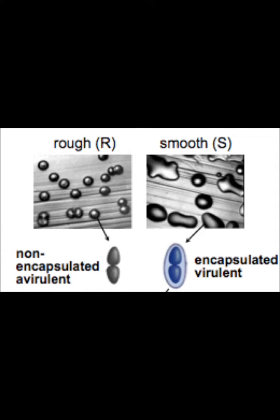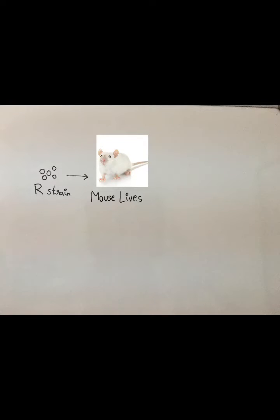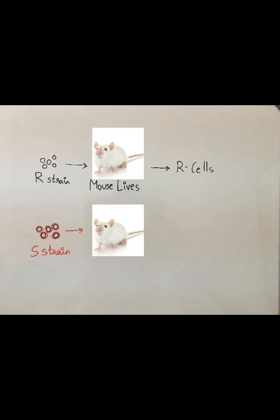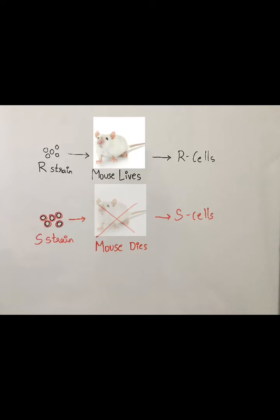The S-strain is named so due to the capsule outside its cell wall, thus forming a virulent S-strain. When he injected live R-strain cells into the mouse, it survived, and he later extracted R-cells from the mouse. When he injected the virulent S-strain cells, the mouse died due to pneumonia, and he later extracted the S-cells from the dead mouse.